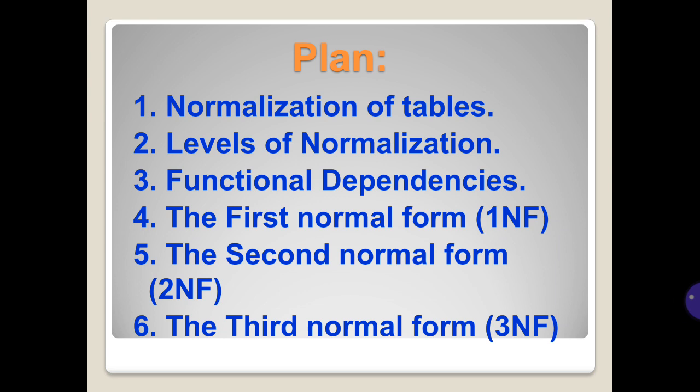Number 4 is the first normal form (1NF). Number 5 is the second normal form (2NF). And finally, number 6 is the third normal form (3NF).